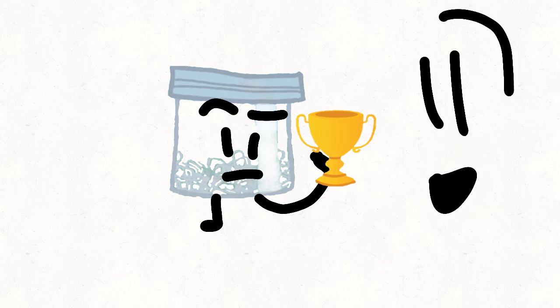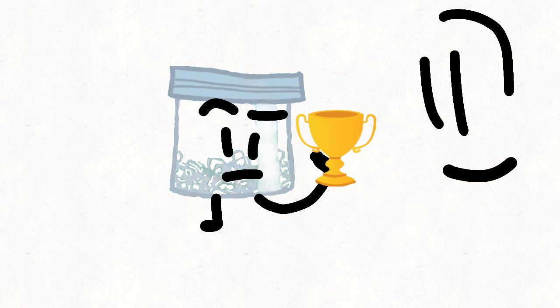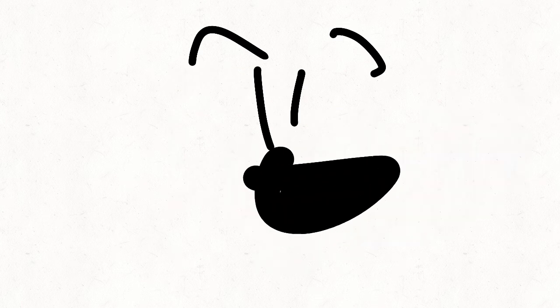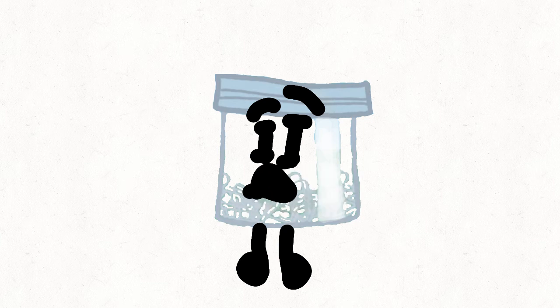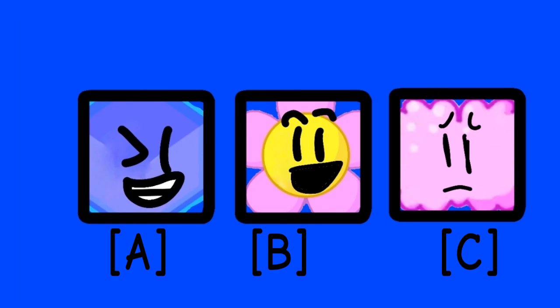So, a bag of clips wins the immunity. I'll choose three people to be up for elimination. I'll choose Brainy, Winner, and Flower. Vote for one of these three characters to stay in the game. Whoever gets the least vote will be eliminated.